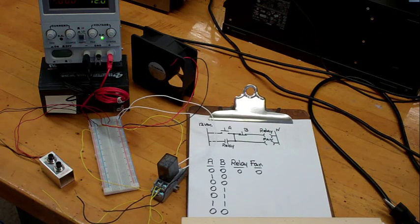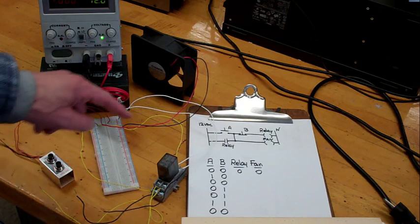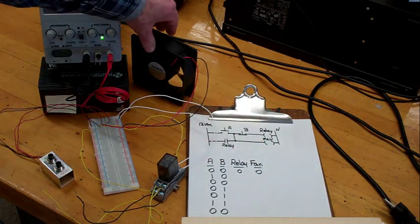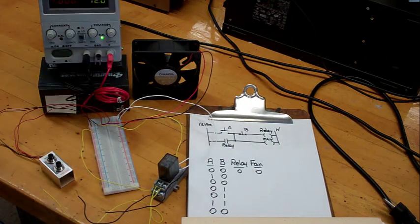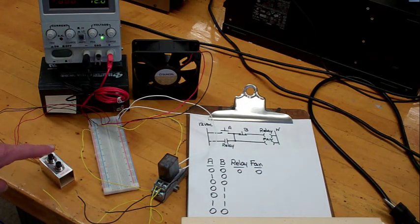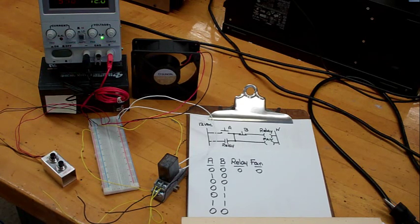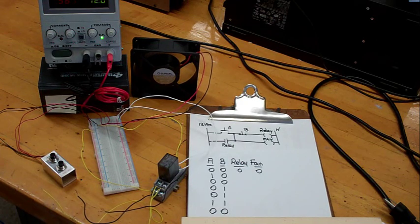I'll do the first few rows. A and B are not pressed. Both the relay and the fan are off. I press A. Both the relay and the fan are on.